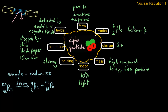This product is called polonium-216 and is an isotope of the element polonium. In the periodic table, polonium has a mass number of 210 but the same atomic number — 84 protons — since it's the same element.